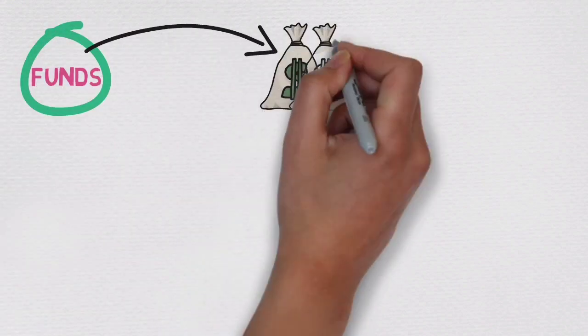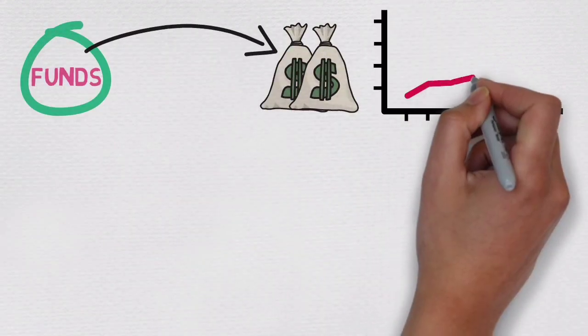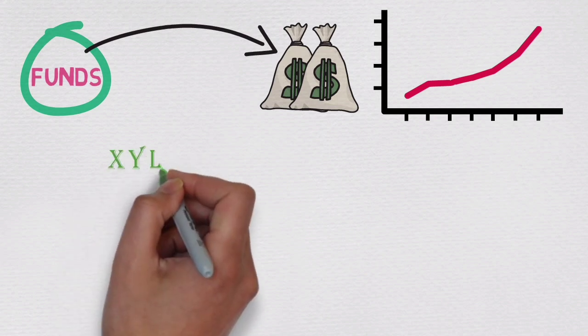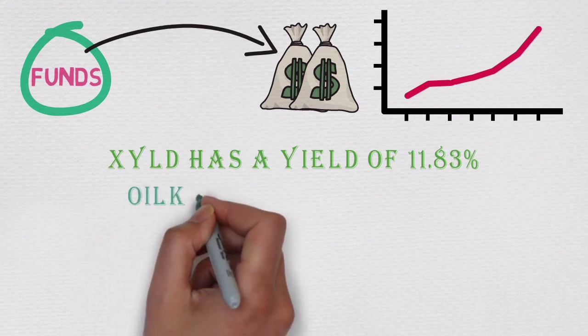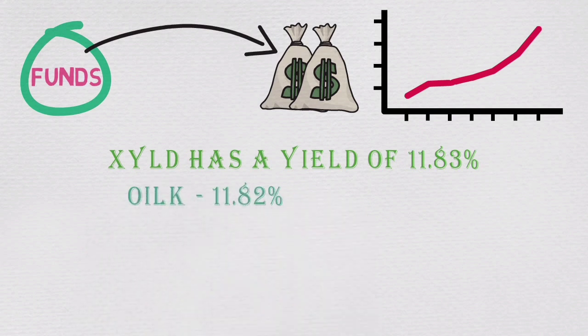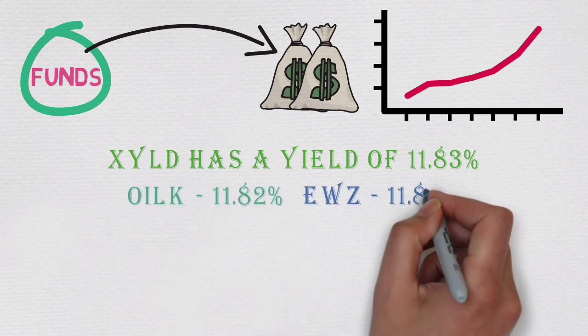Those funds offer attractive dividend yields, even in double digits, which is way higher than other traditional stocks. XYLD has a yield of 11.83%, OILK 11.82%, EWZ 11.81%. Obviously,